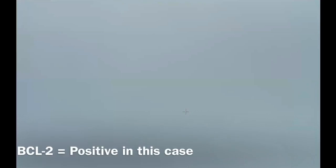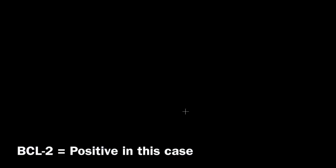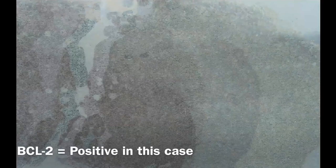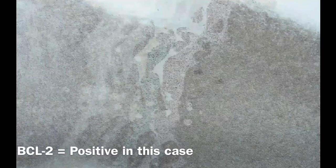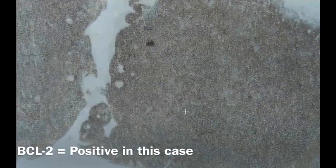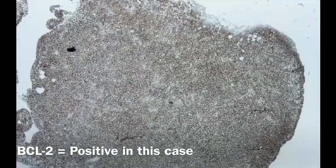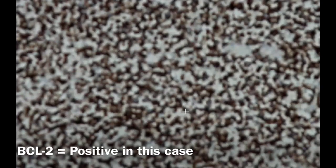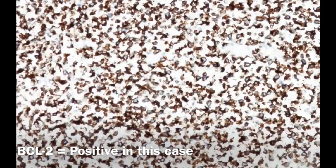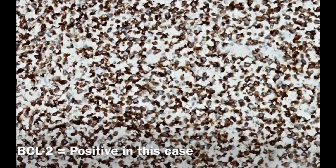Next is BCL2, which is an important marker here. BCL2 is positive in more than 50% of DLBCL cases. As you can see, the population in question is all stained by BCL2. On higher magnification, you can clearly see that all the cells are taking the BCL2 stain.